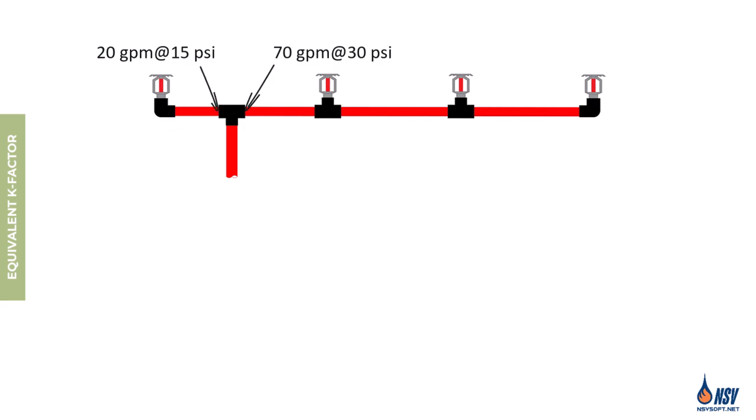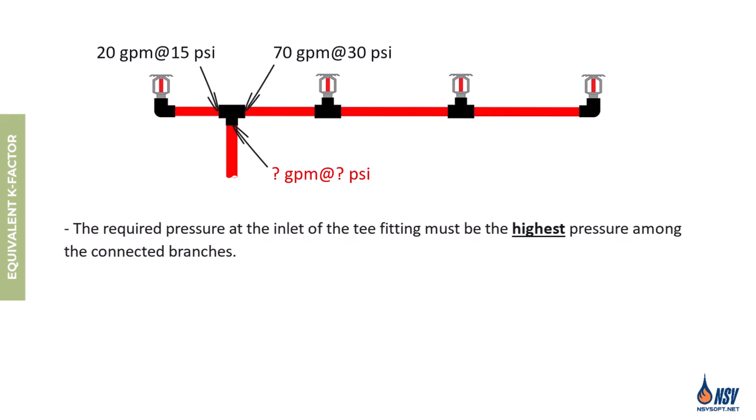Likewise, a flow rate of 20 gpm at 15 psi is calculated at the left outlet of the tee, which supplies the single sprinkler. With these calculated flow rates we can be confident that each sprinkler meets the minimum density required by NFPA 13. The question is what flow rate and pressure are required at the inlet of the tee to supply all four sprinklers. Note that we'll ignore minor losses in the tee fitting to keep this section straightforward. Where the outlets of a tee require different flow rates and pressures, the required pressure at the inlet should match the higher of the two outlet pressures — in this case, 30 psi.